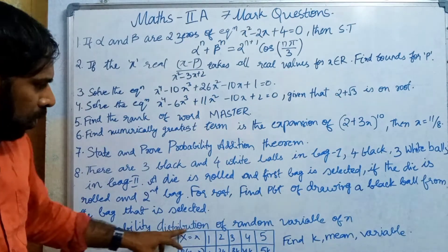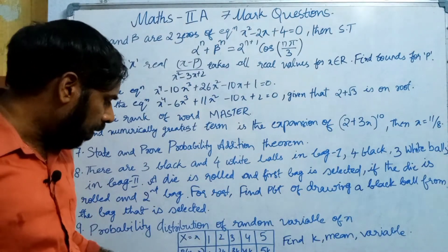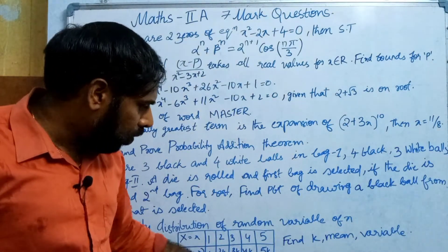Find the probability distribution of a random variable x. x equals 1, 2, 3, P of x equals k equals 2k, 3k, 4k.